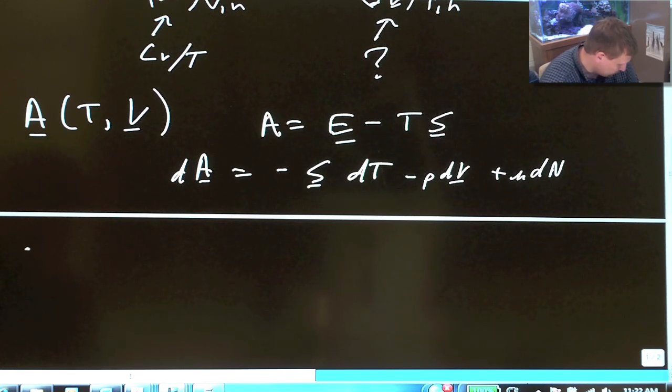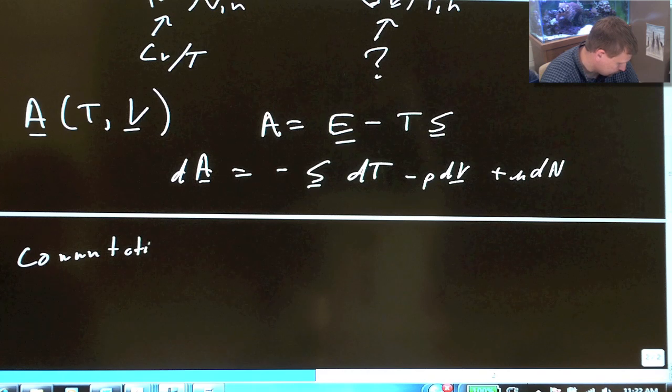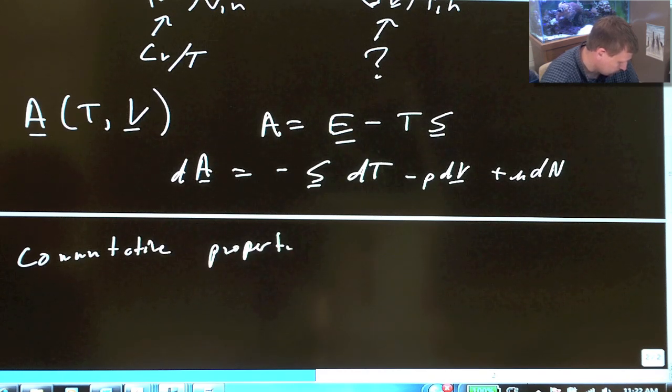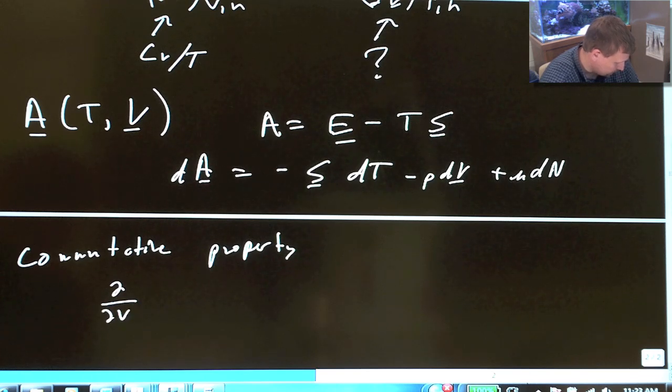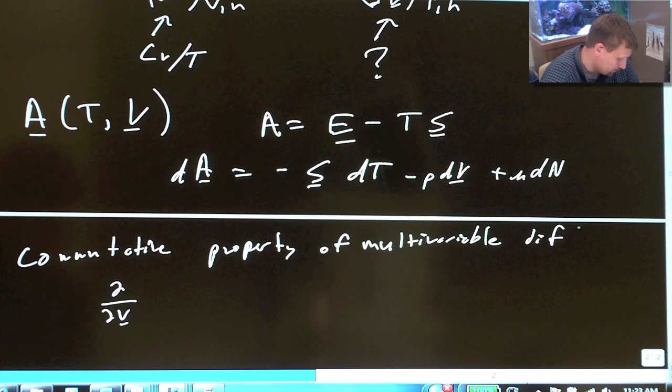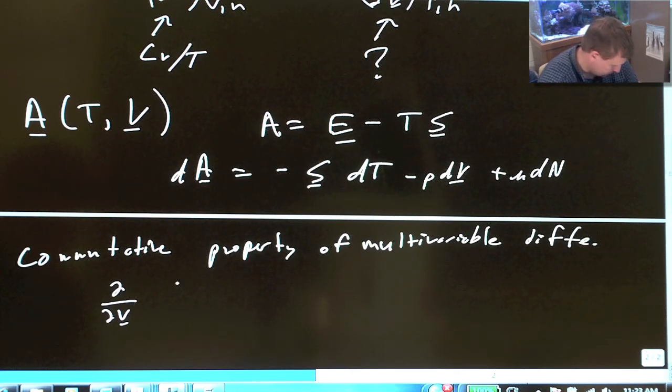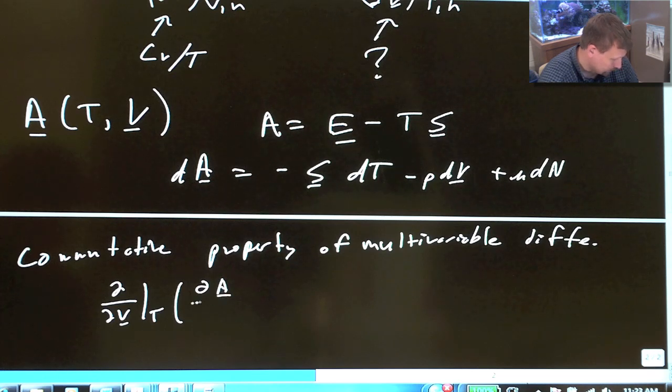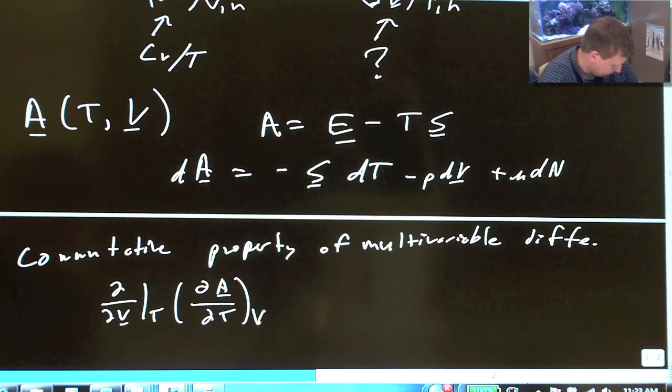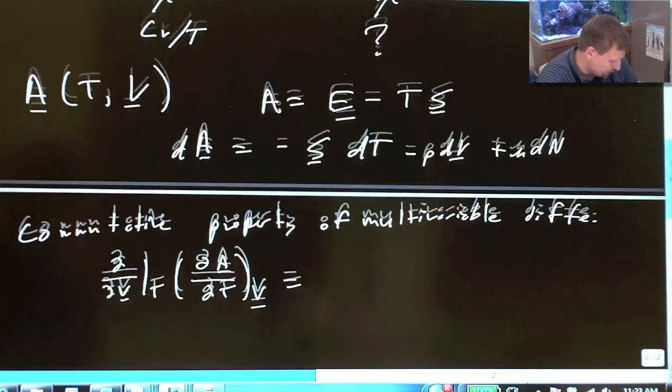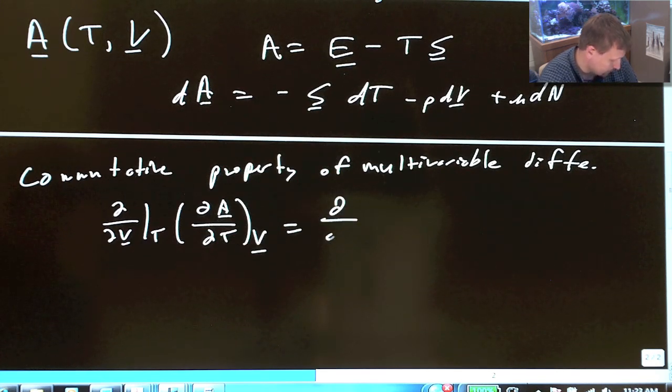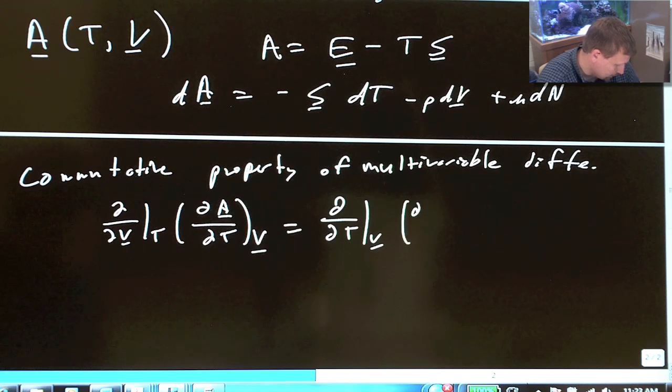So, what we can use is the commutative property of multivariable differentiation. Partial by partial V, constant T, partial A partial T at constant V, must equal the derivatives taken in the different order. So, this must equal partial by partial T, constant V, times partial A partial V, constant T.